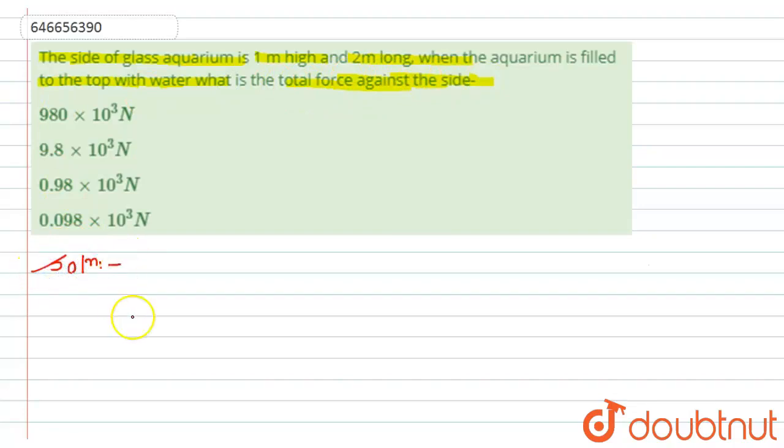So let's see the solution. According to the question, it is given that we have a glass aquarium. Let's suppose this is the glass aquarium which is filled by water to the top. Now, the height of the aquarium is one meter and the length of the aquarium is two meters.